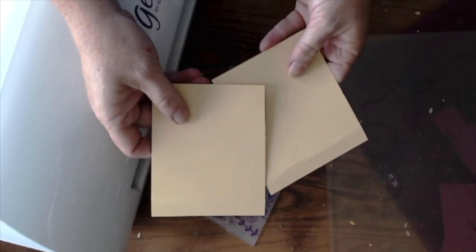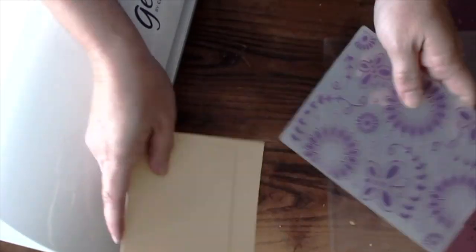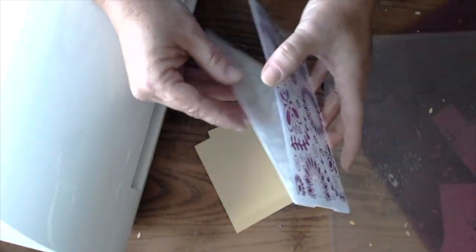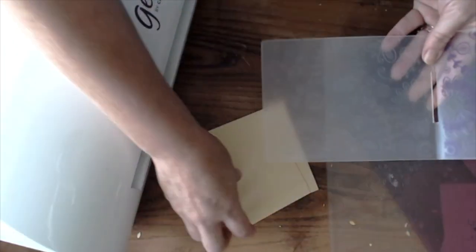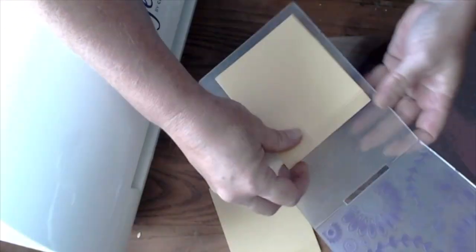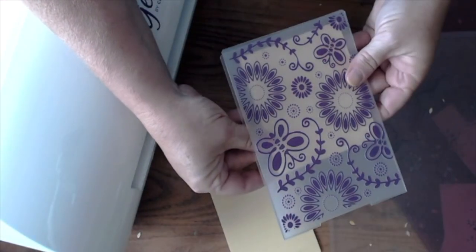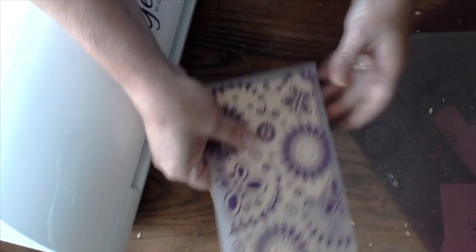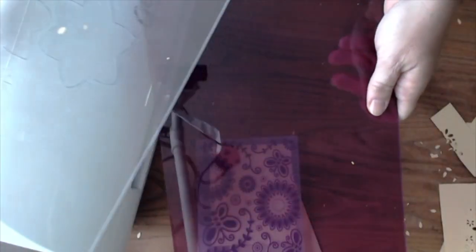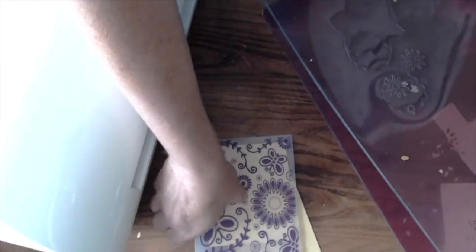Use the Gemini and the flower embossing folder to emboss two of the four by four and a half inch pieces of the pale yellow cardstock. Score all of the pages a half inch from the top of the four and a half inch edge to create four by four inch pages.